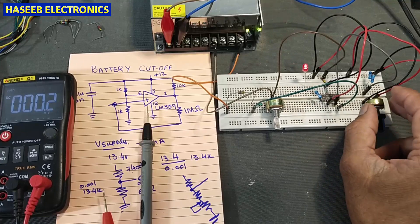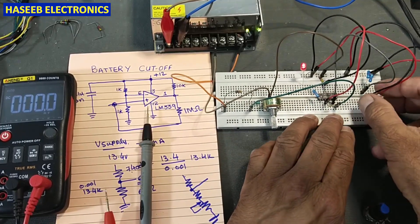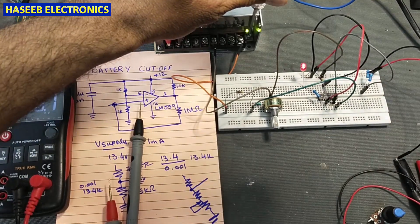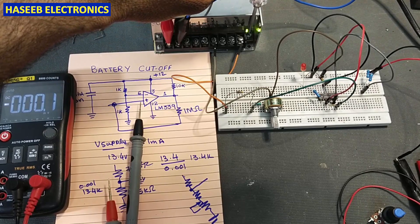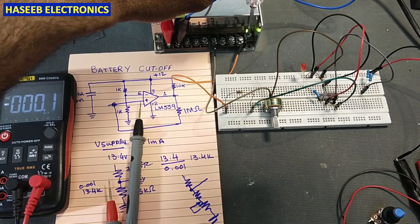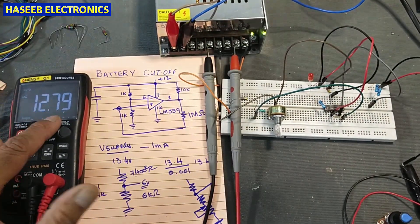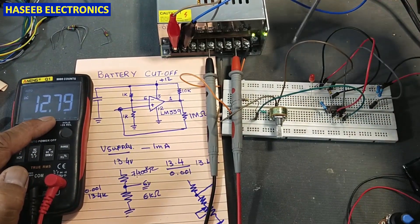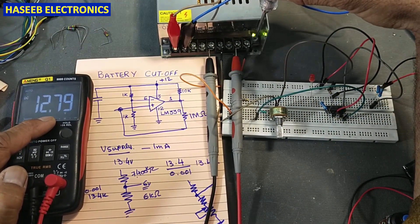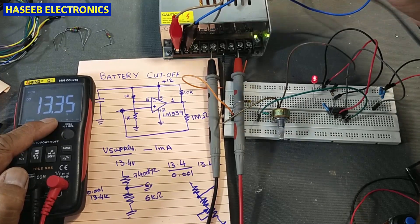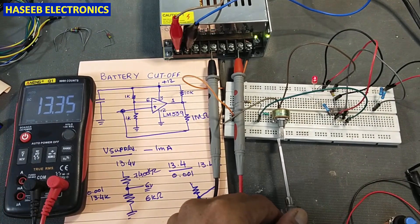We can see the display showing the battery level at 13.4V. Now I will remove the potentiometer connection and decrease the battery voltage. When the battery voltage drops below 13.4V — here it is at 12.79V — the circuit turns off and the battery detector LED goes off. Adjusting back up: at 13.35V it turns on again, so we can fine-tune the level from the trim pot.